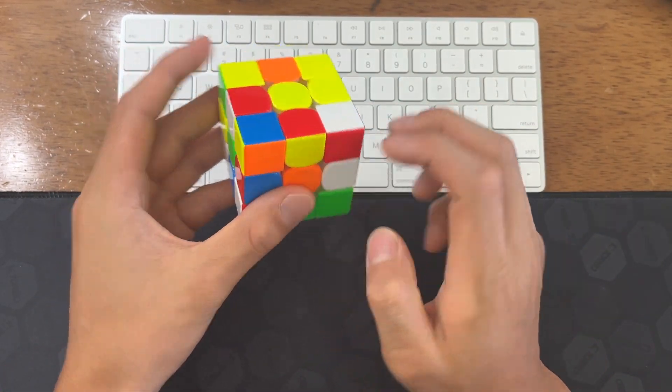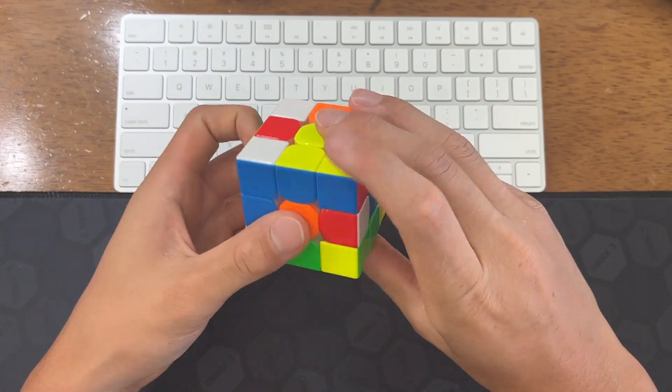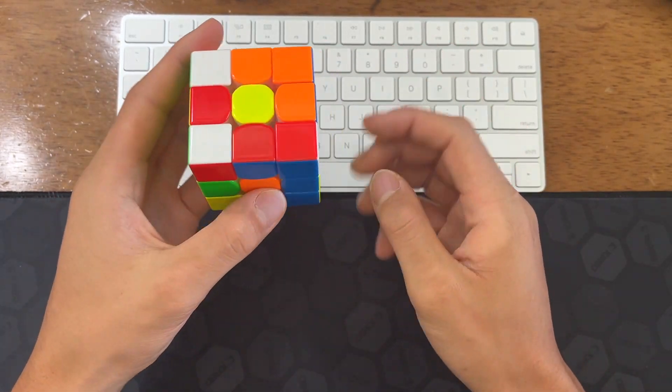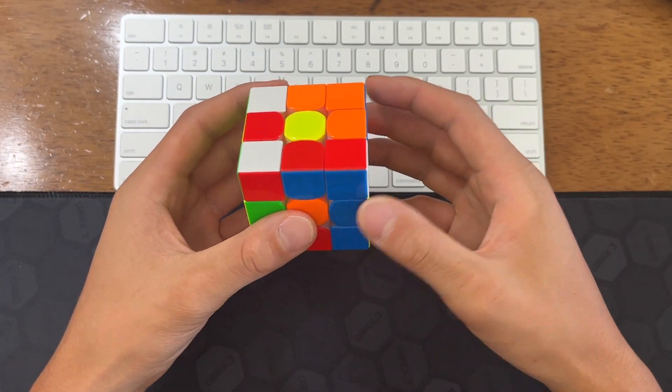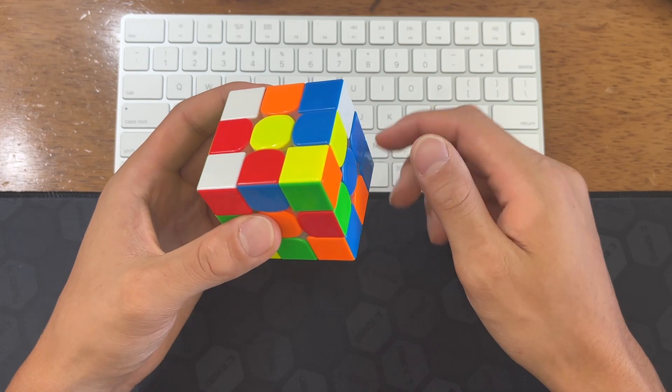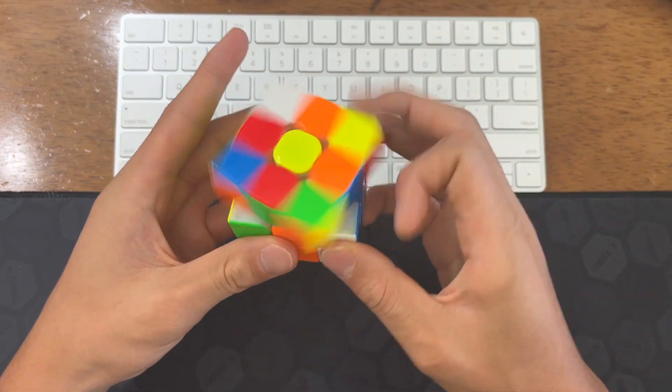I can do a D U2 R' U' F to get these two connected and then pair it up. I'm actually going to unpair it and then solve the cross and then pair it up again and then do these as my second pair. Pretty easy third pair.